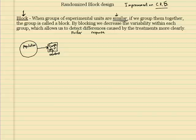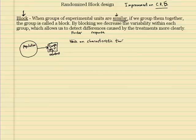So basically what we want to do is we want to block. We want to block on characteristics that may influence the response.